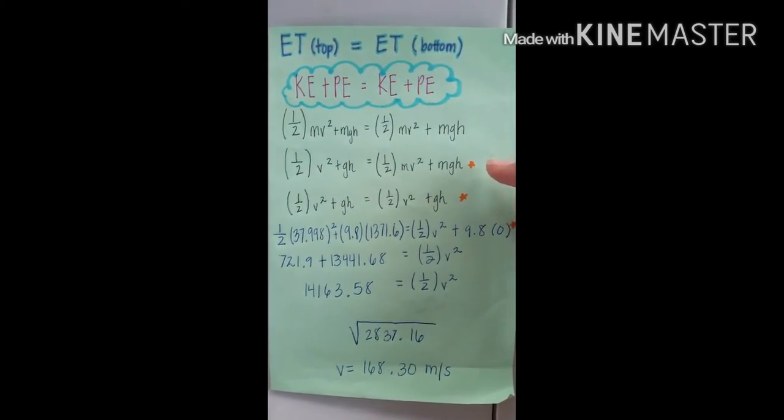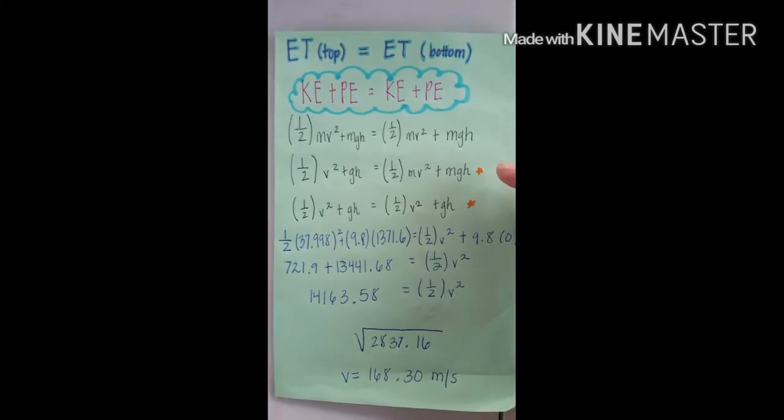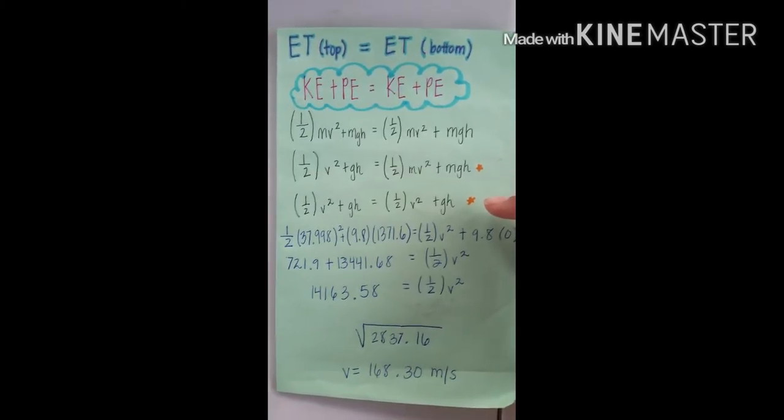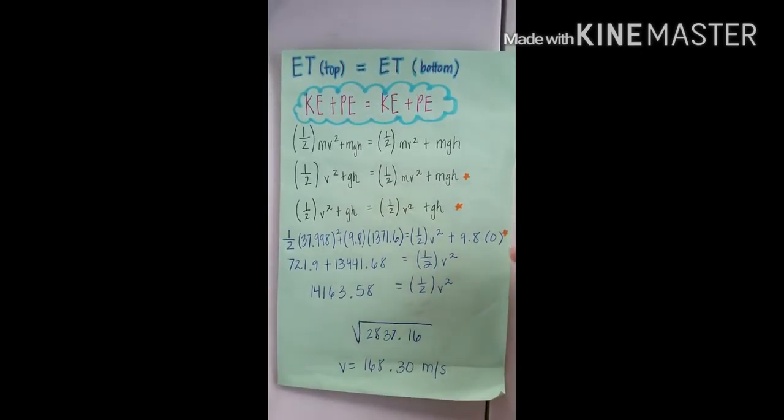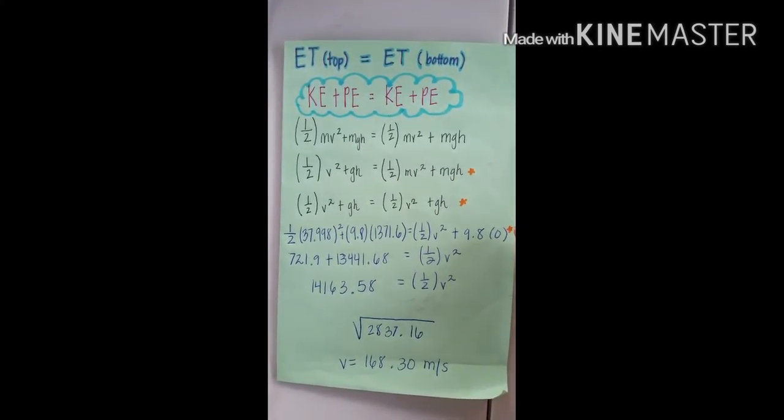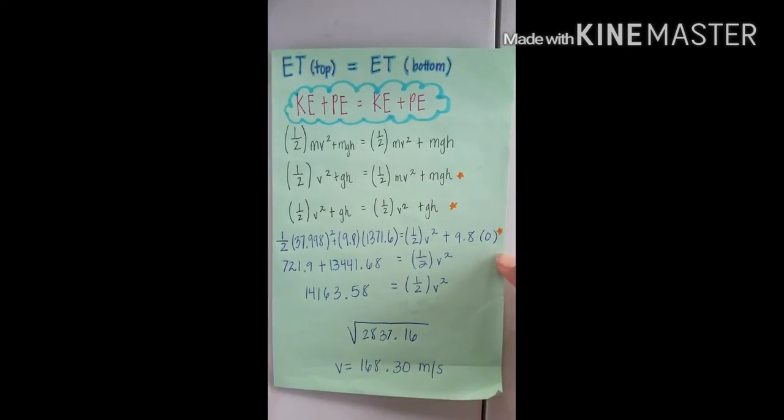On to the second step, we need to remember that the masses cancel out because it is the same coaster at the bottom and the top. And right here, we are going to substitute the numbers at each location. And the height at the bottom is zero because it is the lowest point when comparing to the starting height.